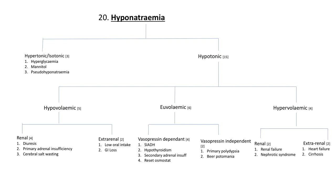Today we're talking about hyponatremia. Quick background: water homeostasis, which controls serum sodium concentration, is regulated by thirst and the hormonal interplay between the central nervous system and the kidneys. Maintenance of normal serum sodium concentration is important for preserving cell volume. Hyponatremia is generally defined as a sodium concentration below 135 milliequivalents per liter.